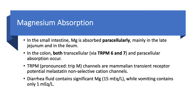In the small intestine, magnesium is absorbed paracellularly — meaning between the cells — mainly in the late jejunum and ileum. In the colon, absorption is both transcellular and paracellular. The transcellular absorption occurs via two channels: TRPM6 and TRPM7 — mammalian transient receptor potential melastatin non-selective cation channels. Diarrhea fluid contains a lot of magnesium — 15 milliequivalents per liter — while vomiting contains very little, only 1 milliequivalent per liter, so vomiting doesn't really lead to hypomagnesemia unless oral intake is poor. Transcellular absorption is active and requires energy, while paracellular absorption is passive and does not.